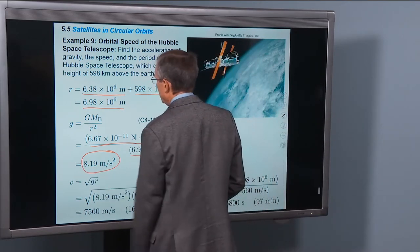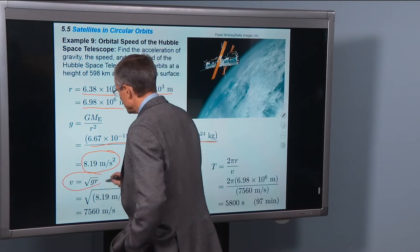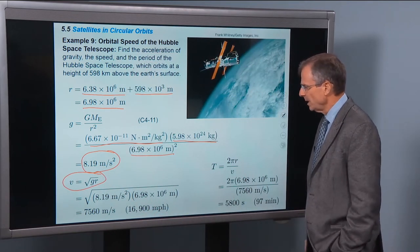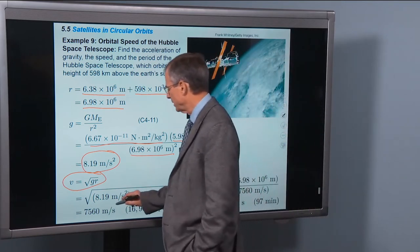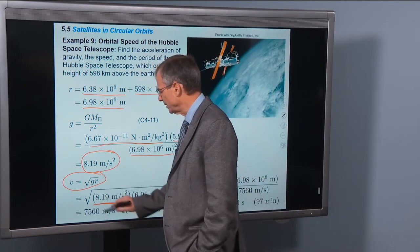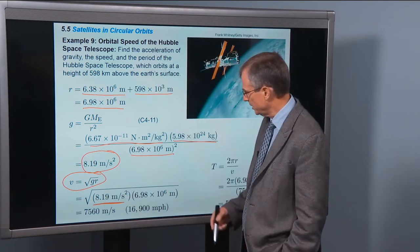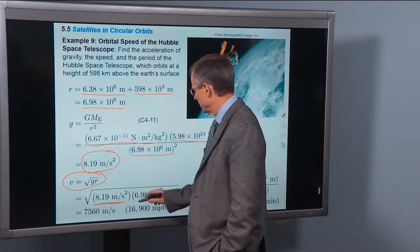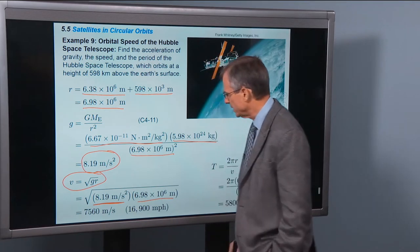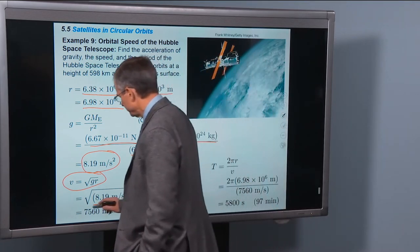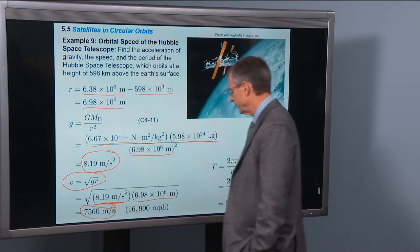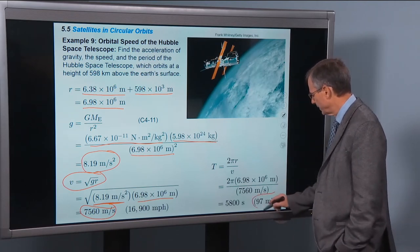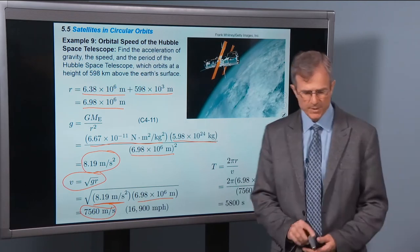So the speed, just from the last problem, is the square root of gr. And we went through that calculation. And we can now put in the value of g, the lower value of g the Hubble telescope experiences, times the larger radius to get the speed of the Hubble Space Telescope. About, in a period of about 97 minutes. Same calculation really.